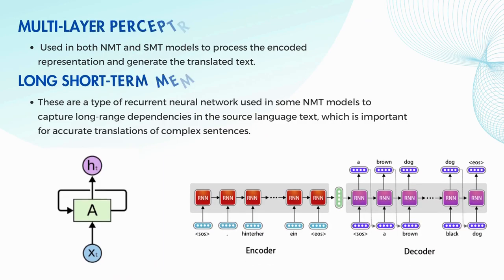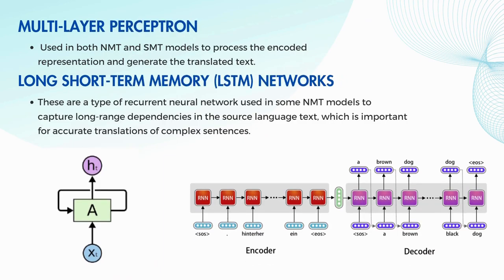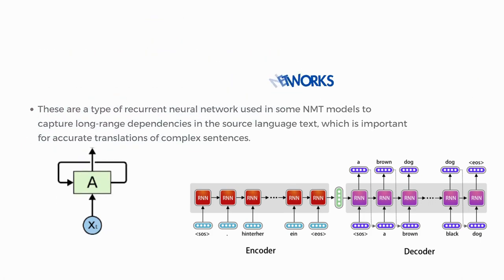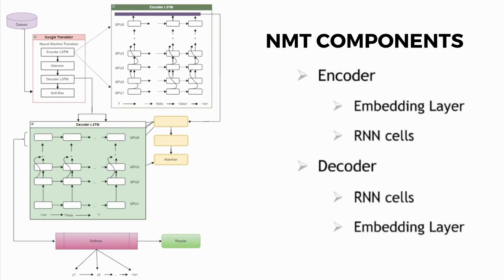A Multilayer Perceptron is a component shared by both NMT and SMT, playing a role in processing condensed information from the encoded text to produce the final translated output. LSTM, which stands for Long Short-Term Memory Networks — a type of Recurrent Neural Network — is employed in NMT to understand longer connections and dependencies in the source language text. This is crucial for accurately translating complex sentences, ensuring the model captures nuanced meanings and context. The NMT architecture consists of encoders and decoders: in the encoder there is an embedding layer followed by RNN cells, while in the decoder RNN cells appear first, then the embedding layer.